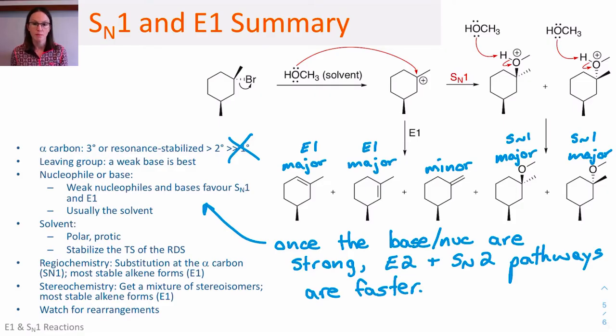For the elimination reaction, it's the most stable alkene overall that forms. And if they're equivalent, we simply get a mixture of products. Watch out for rearrangements. Those happen at the point of the formation of the alpha carbon. That's going to be covered in the next video.